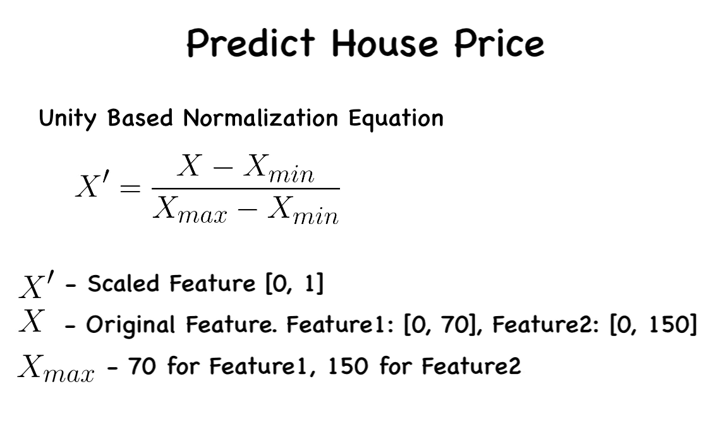x max represents the maximum value of a given feature. So, this means that x max is 70 for feature 1 and 150 for feature 2. x min is the minimum value of a given feature. In both cases, x min is equal to 0.